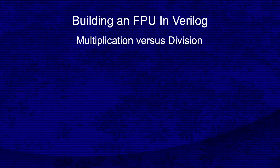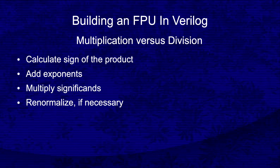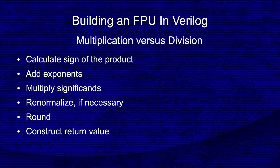Just as addition and subtraction mirror each other, so too do multiplication and division. Let's start by reviewing the steps needed in the floating point multiplication circuit. The circuit needs to calculate the sign of the product, add the exponents of the multiplicand and multiplier, multiply the significands. If necessary, renormalize the product of the significands and add one to the sum of the exponents. Then round the significand and construct the 16, 32, 64, or 128-bit return value.